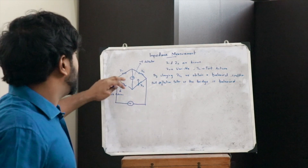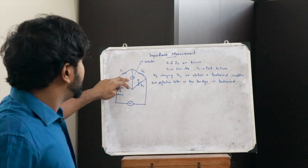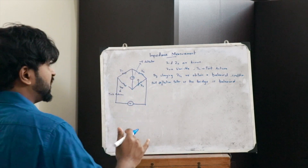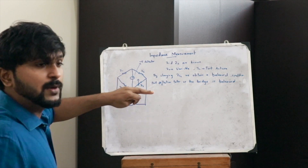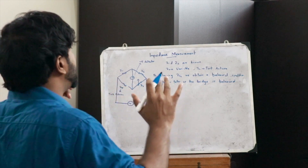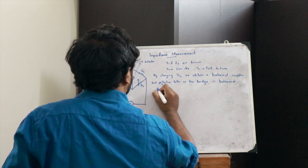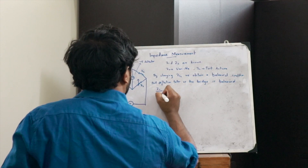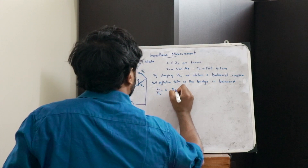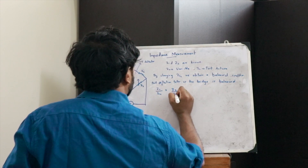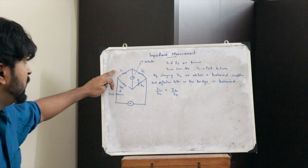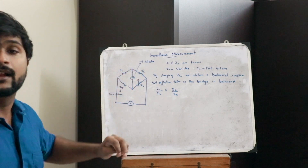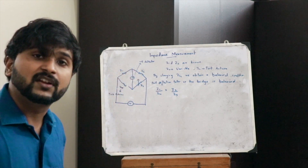When this particular bridge is balanced, the balanced condition is given as Z1 divided by Z4 equals Z2 divided by Z3 — that is Z1/Z4 = Z2/Z3. That is the balanced condition.